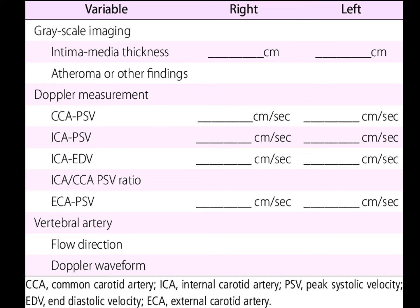This is another simple report specimen: it gives all patient and clinic details and flow charts, with grayscale imaging including intima media thickness and other findings, then Doppler measurements of CCA, ICA peak systolic and diastolic, ICA-CCA ratios, and ECA peak systolic velocity. This report has not taken proximal, mid, and distal parts separately, but it has mentioned the vertebral artery with its flow direction and waveform.